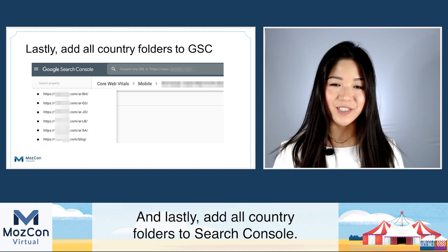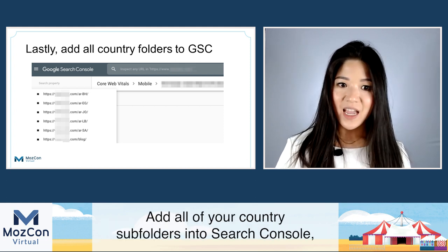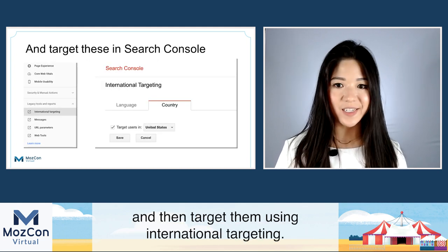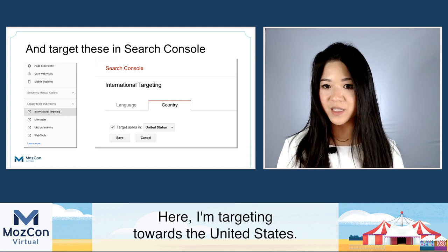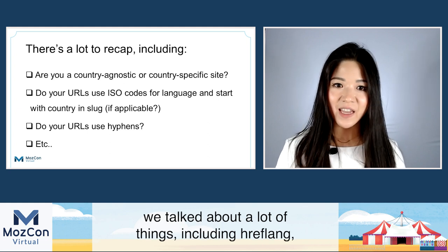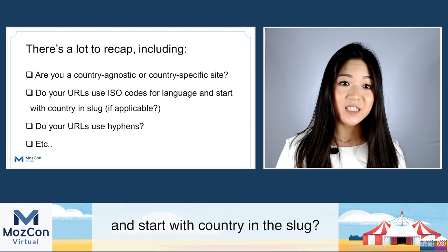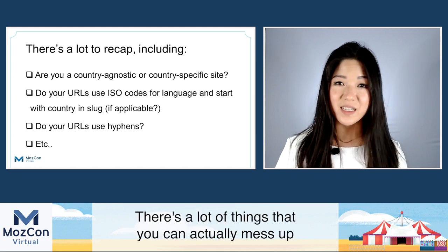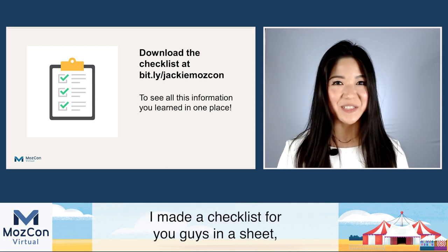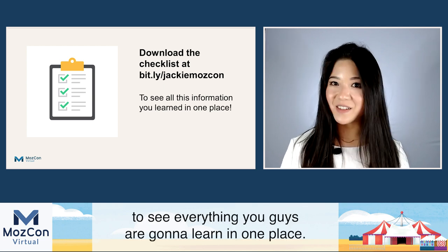Add all country folders to Search Console. Again, this goes back to starting with country in your URL — it'll make this a lot easier. Add all of your country subfolders into Search Console and then target them using international targeting. There's a lot to recap — we talked about hreflang, whether you're country-agnostic or country-specific, whether your URLs use ISO codes and start with country in the slug, whether you're using hyphen URLs. Because that's a lot to remember, I made a checklist for you in a sheet at bit.ly/JackieMosCon.